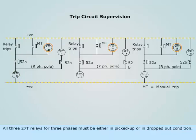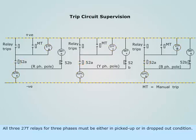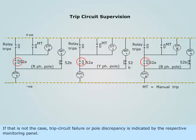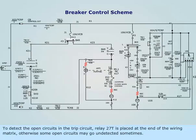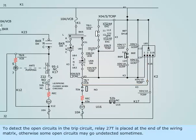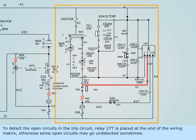All three 27T relays for the three phases must be either in picked-up or in dropped-out condition. If that is not the case, a trip circuit failure or pole discrepancy is indicated by the respective monitoring panel. To detect open circuits in the trip circuit, relay 27T is placed at the end of the wiring matrix; otherwise, some open circuits may go undetected.